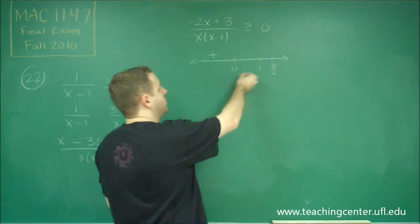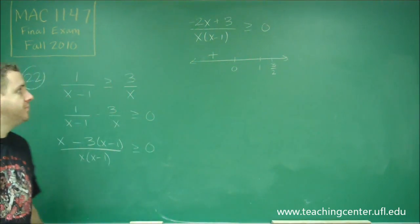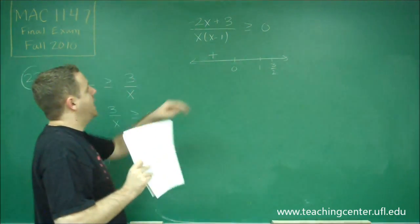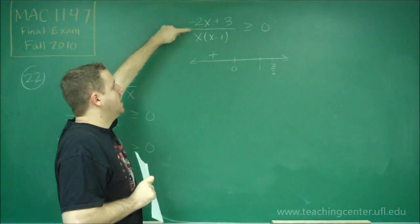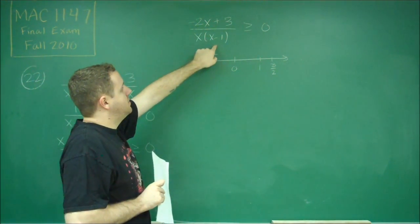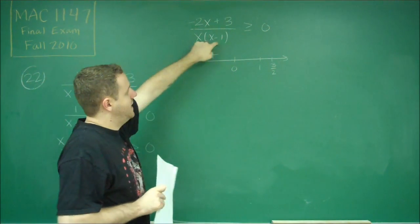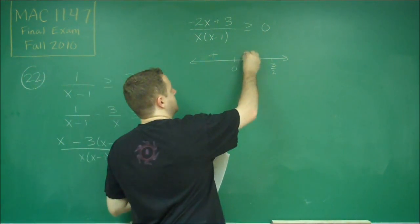What about something in between 0 and 1, like say 1 half? Well, if we plug in 1 half, the top is still going to be positive. x is certainly going to be positive, but this is going to be negative, so we have positive, positive, and negative. That gives us a negative.